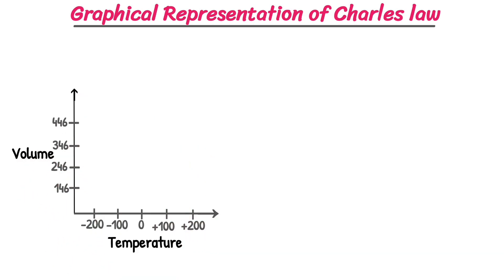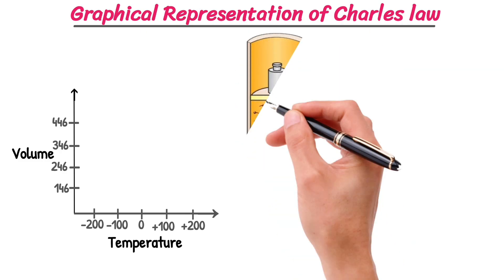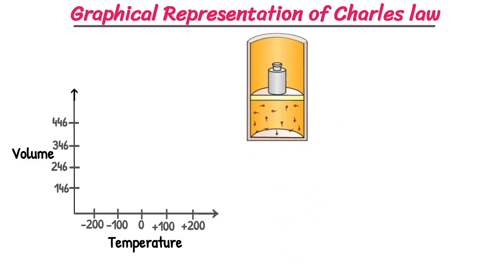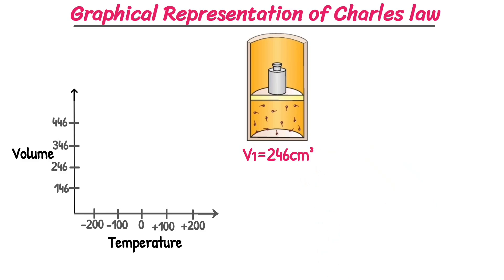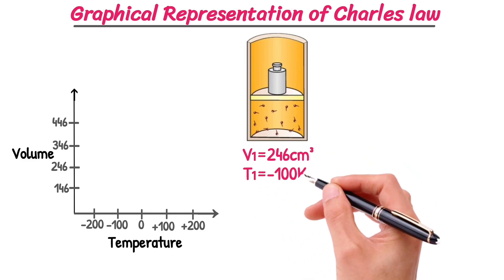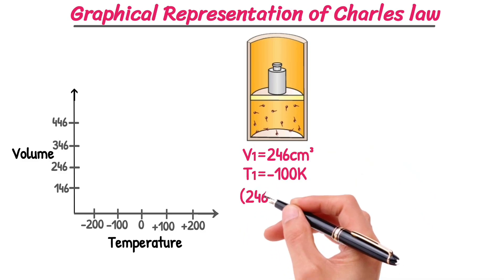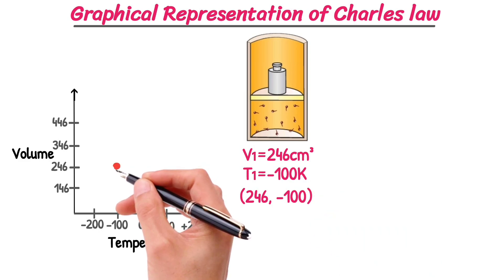Imagine we have gas in a closed container with a movable piston. Our initial volume is 246 centimeter cube, and the temperature is minus 100 Kelvin. Our first coordinate is 246, minus 100. So here's what it looks like on the graph.